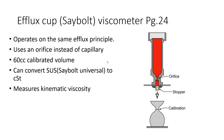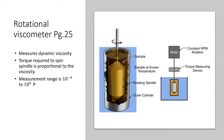The efflux cup — also called the Saybolt viscometer — works on the same principle: fill it up, there's an orifice, it has a set volume, and you time how long the fluid takes to flow through. This is also a measurement of kinematic viscosity — no force applied.